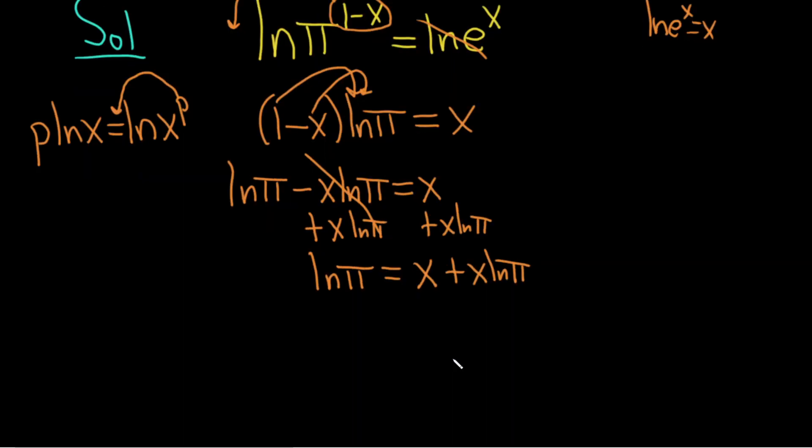Now what we can do is factor out the x from both terms on the right hand side. So we have ln(π) = x(1 + ln(π)). Now we can just divide both sides by 1 + ln(π), and then 1 + ln(π).